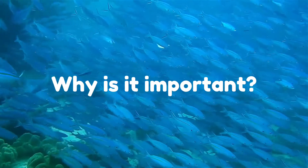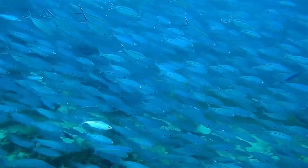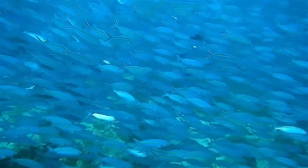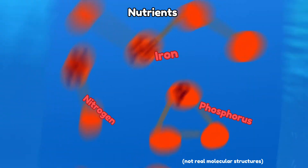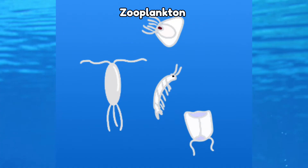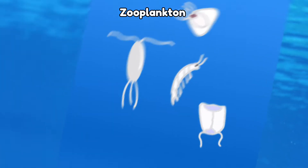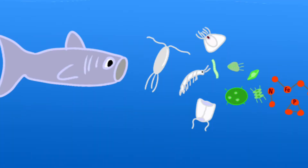Why is coastal upwelling important? When you get this nutrient-rich water from deep in the sea and it comes up into the sunlight, you get lots of phytoplankton, which are then eaten by zooplankton, which are then eaten by fish. So the nutrients come up to the coast and in the end you get lots of fish.